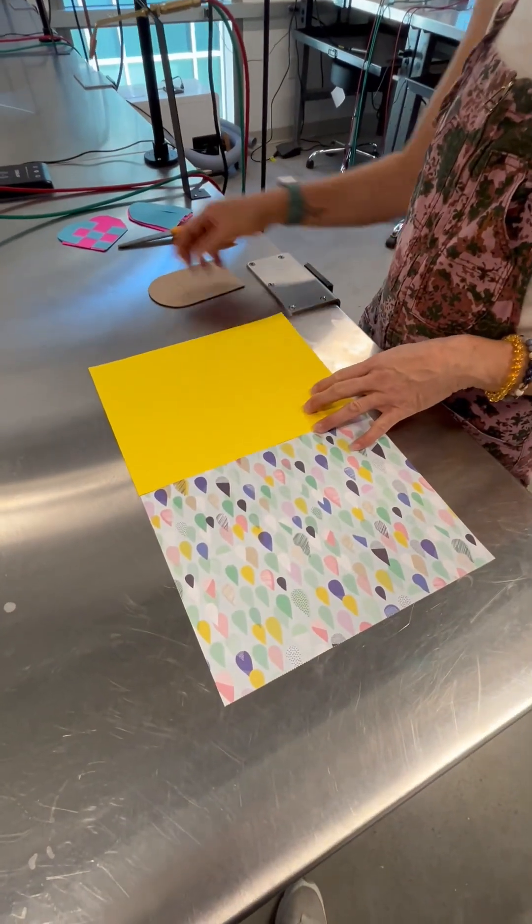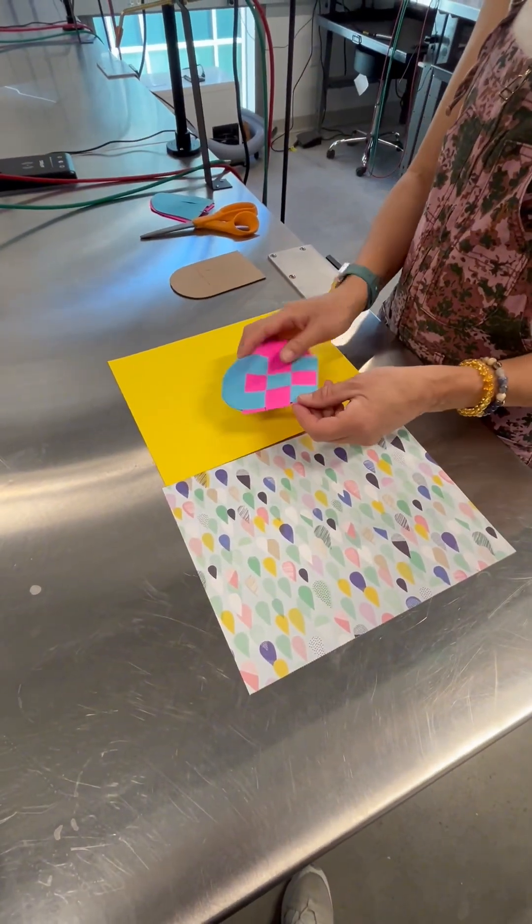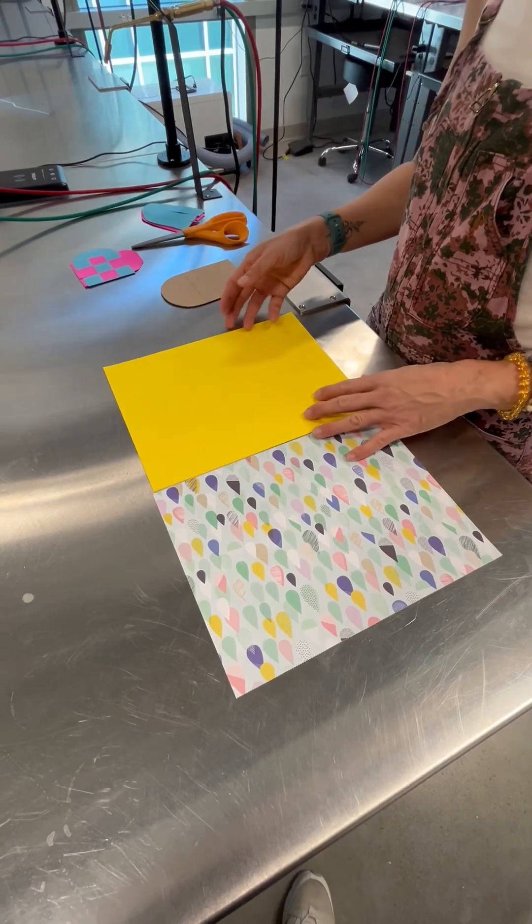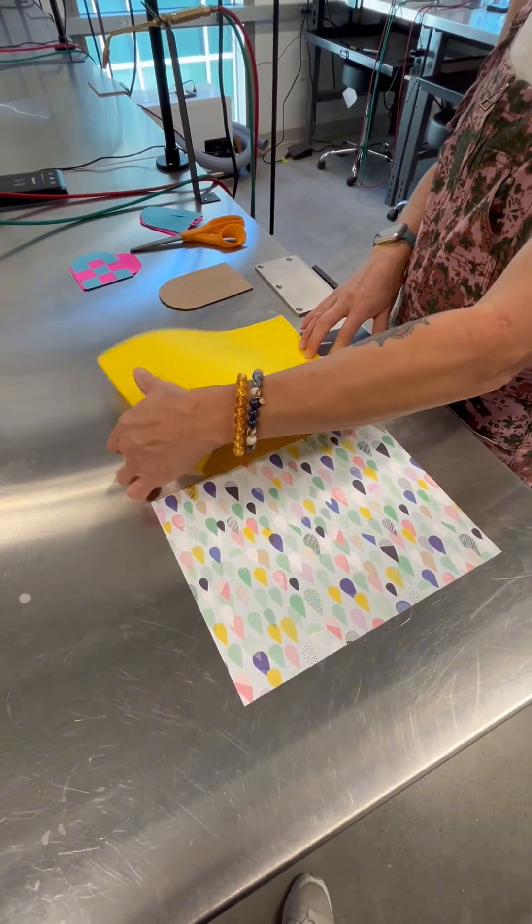All right, we're going to learn how to make woven heart baskets. First, you start by taking your paper and you fold it in half.